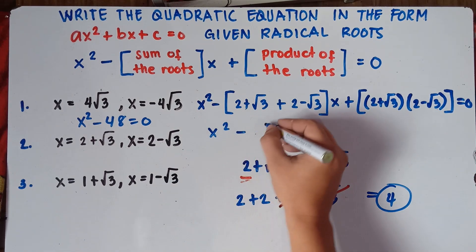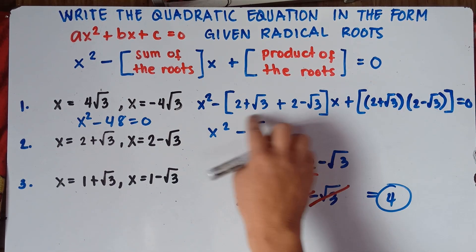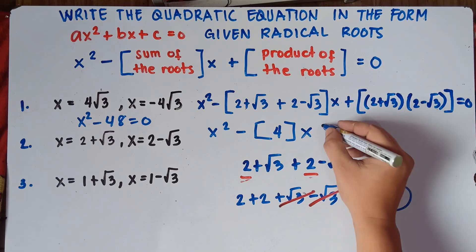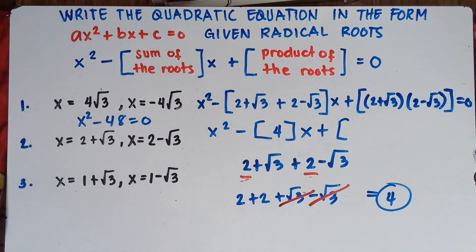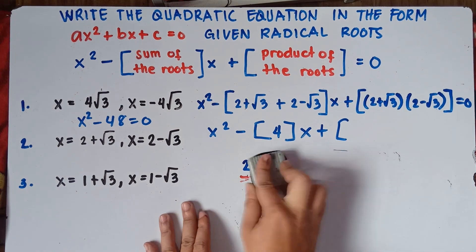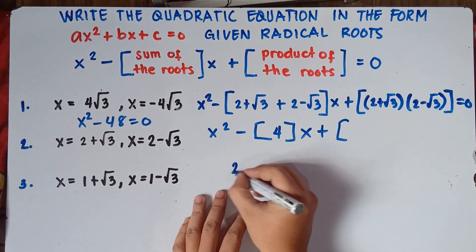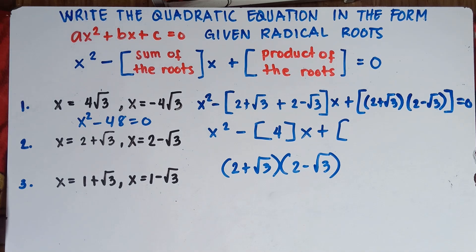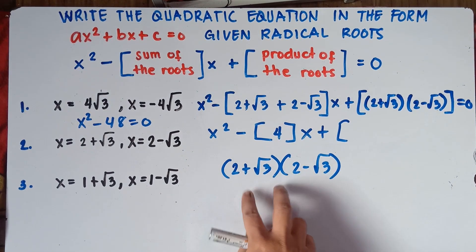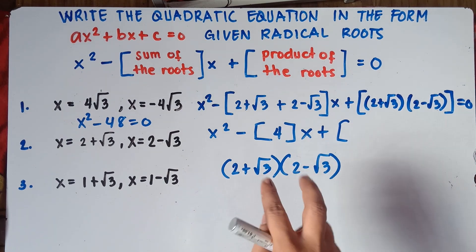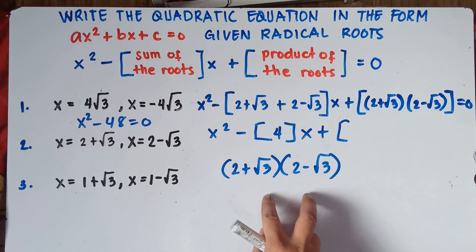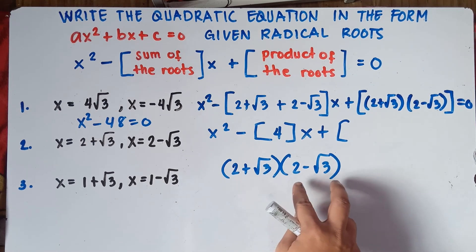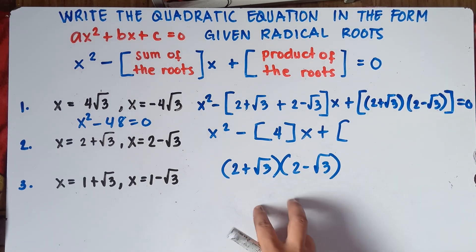So this will be x squared minus, and our answer for this bracket is 4, times x. Then we multiply the product. So this will be 2 plus square root of 3 multiplied by 2 minus square root of 3. Since we have a binomial — 2 terms — you need to use the FOIL method. Do not forget: if this is binomial, you always use the FOIL method. FOIL stands for first, outer, inner, last.